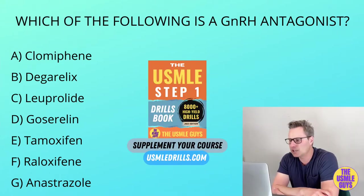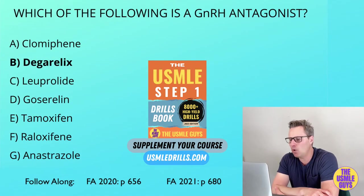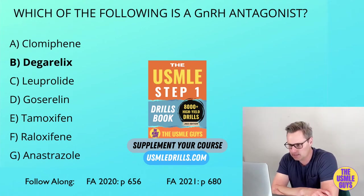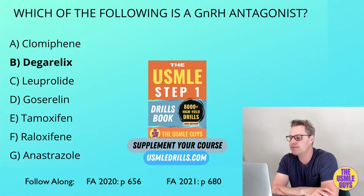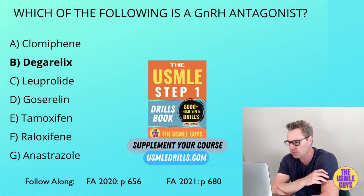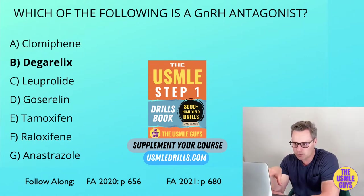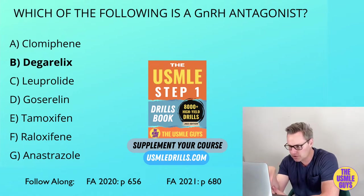The correct answer here is B. Let's go over these medications, starting with the focus of this question: degarelix. Degarelix is used in prostate cancer and it works by acting as a GnRH antagonist. Its side effects may include liver toxicity and hot flashes. Now let's go through the rest of these options and cover the MOA, adverse effects, and uses of each.